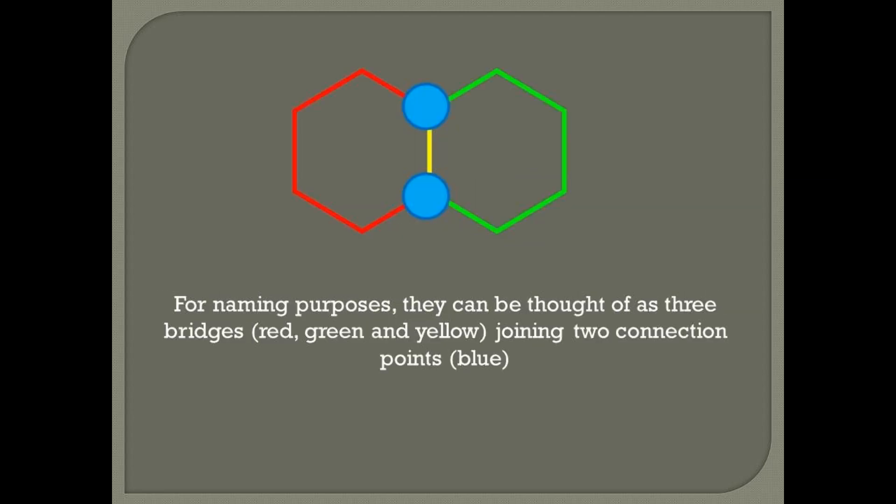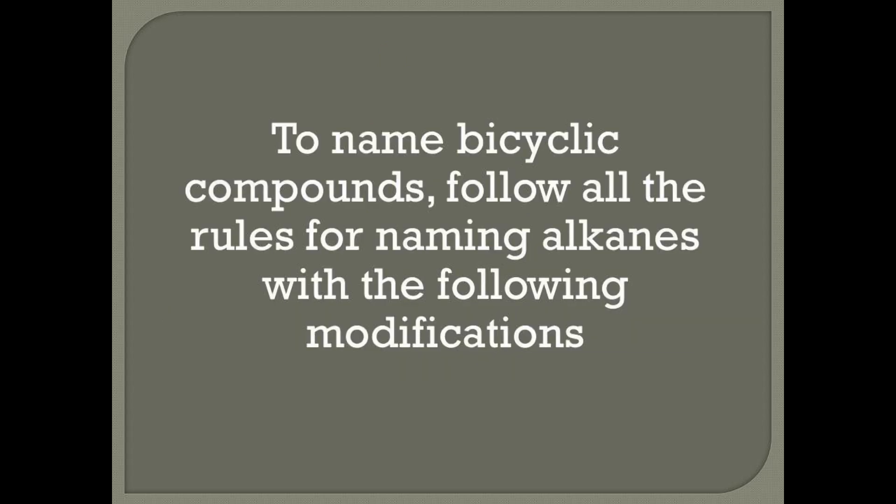For naming purposes, they can be thought of as three bridges, such as the red, green and yellow bridges, joining two connection points, such as the two blue points shown here.